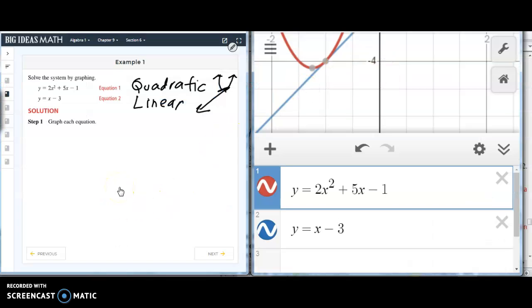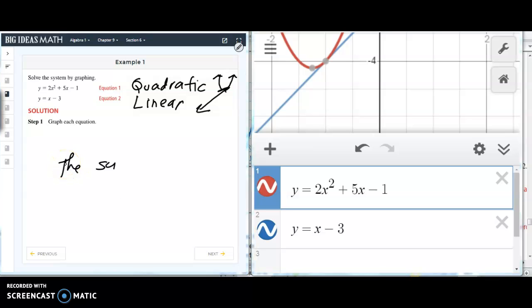So, going back here, it means that the system has one solution, which is, if I recall, it was negative 1, negative 4. So, the solution is negative 1, negative 4.